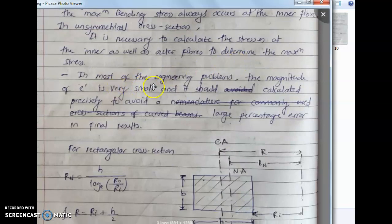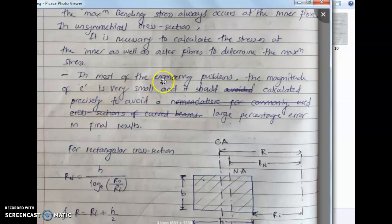In most engineering problems, the magnitude of eccentricity e is very small and must be calculated precisely to avoid a large percentage error in the final result. Even though this value is very small, we must calculate the exact value of e = R minus R_N. We will now see the values of R and R_N for various cross-sections.